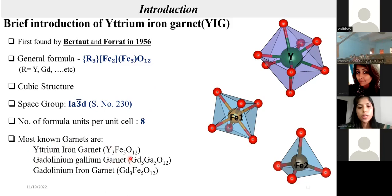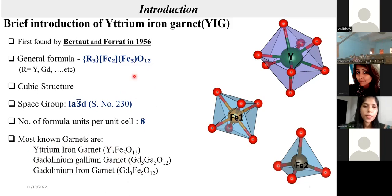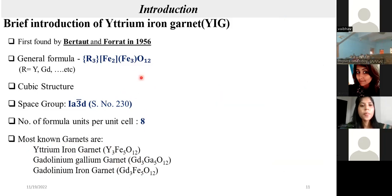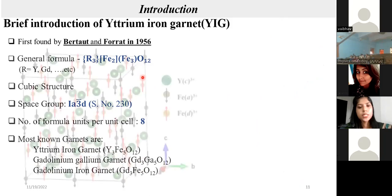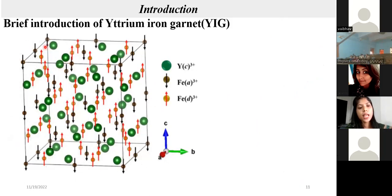The most well-known garnets are yttrium iron garnet, gadolinium iron garnet, and gadolinium gallium garnet. You may have heard of the neodymium yttrium aluminium garnet laser — it is very popular and most laser instruments use it.